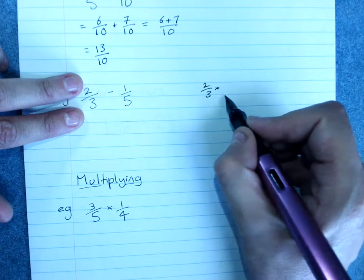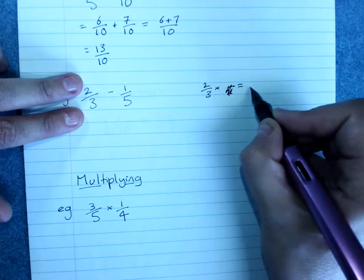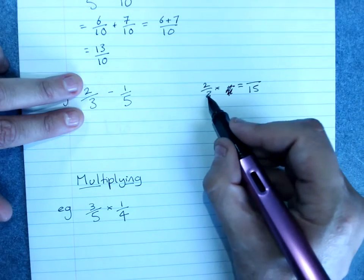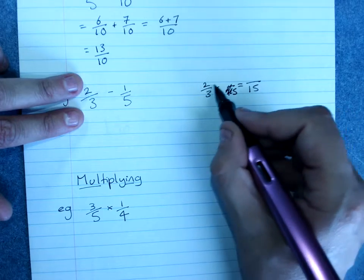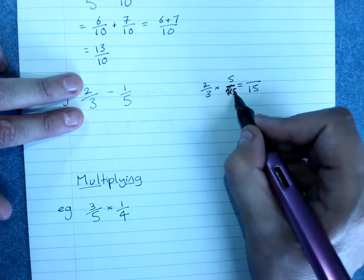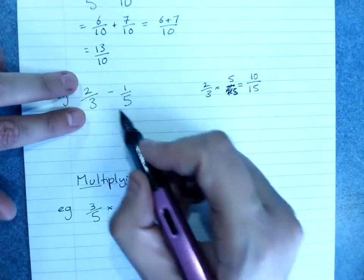I need to get that to become something over 15. 3 times what would give me 15? That would be 5. So I need to times by 5 on the top as well. 2 times 5 is 10. So I've got 10 over 15 is my 2 thirds.